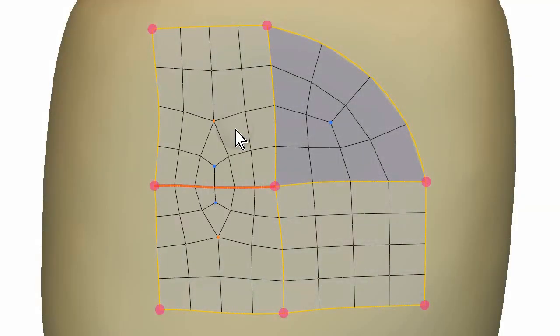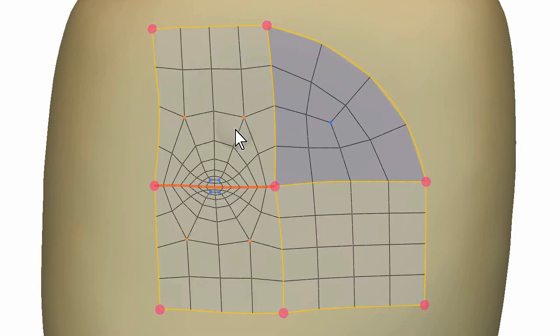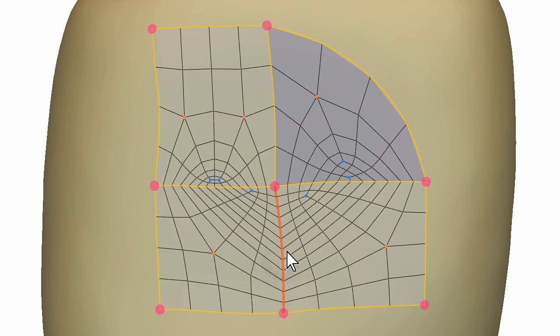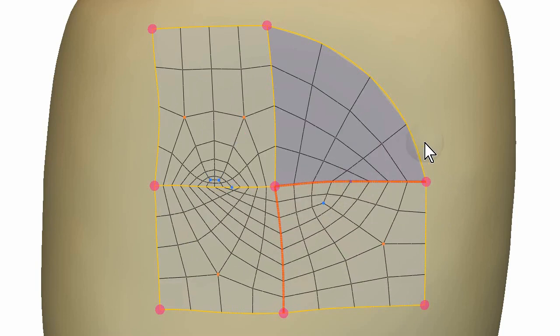The user can change the number of edge subdivisions at any patch boundaries. The system inserts irregular vertices inside patches as needed. The change is always kept local within patches adjacent to the edited boundaries.